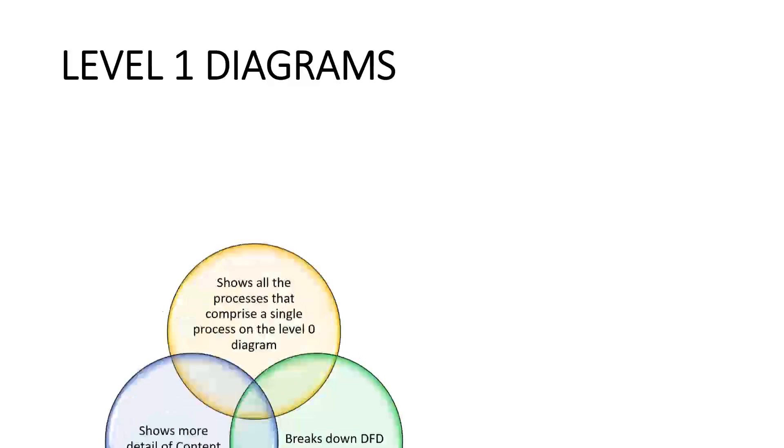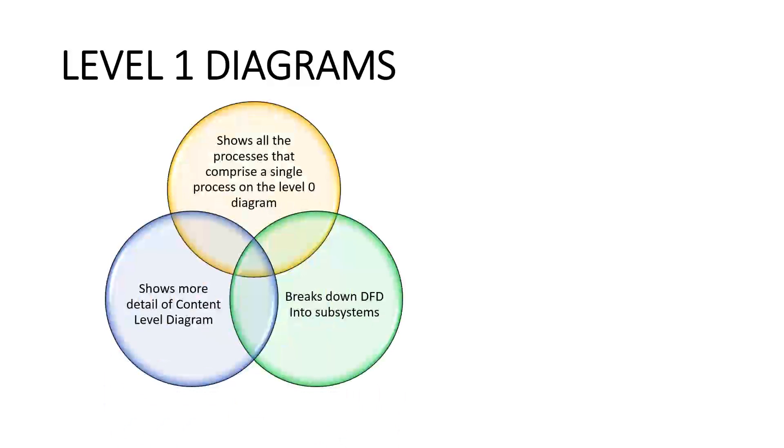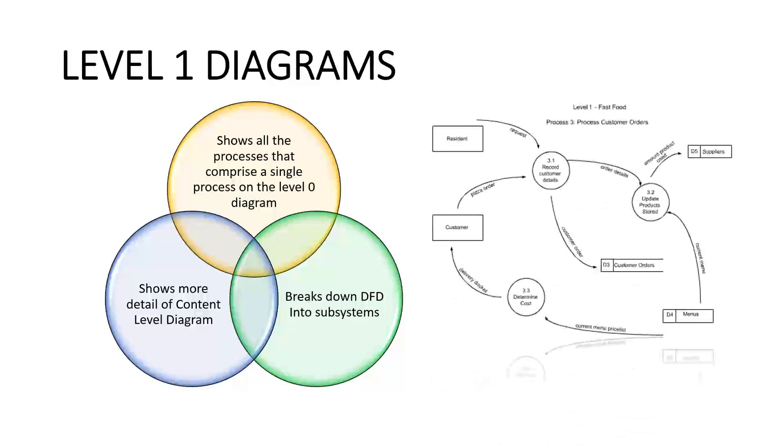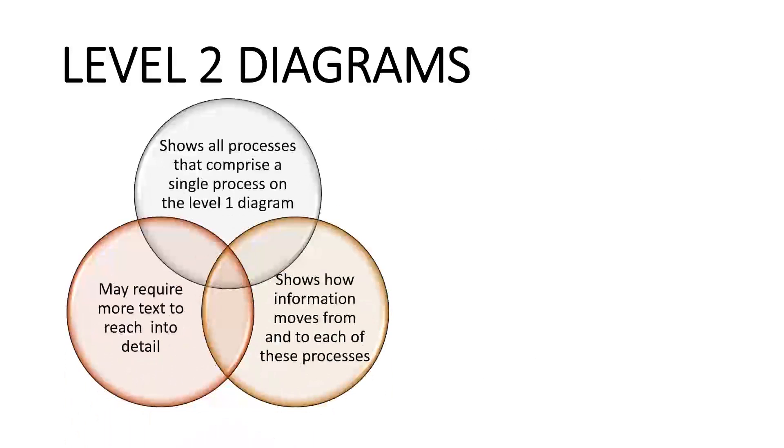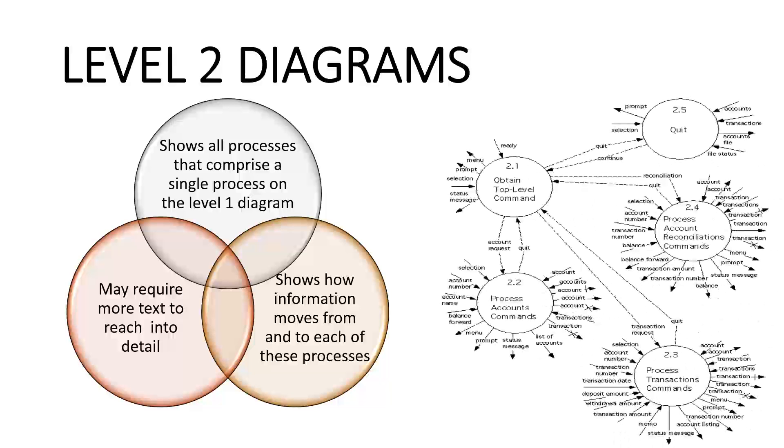DFD level 1 provides a more detailed breakout of pieces of the context level diagram. Here, DFD is broken down into subsystems. DFD level 2 then goes one step deeper into parts of level 1. It may require more text to reach the necessary level of detail about the system's functioning.